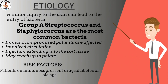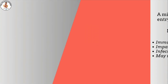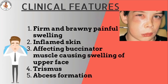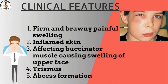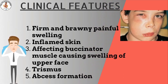Periapical infection extending into the soft tissue may reach up to the palate, causing swelling of an orbit and nose. Clinical features of cellulitis include painful swelling of the involved soft tissue, which is firm and brawny. Inflammation of the skin is seen, having a purplish color.